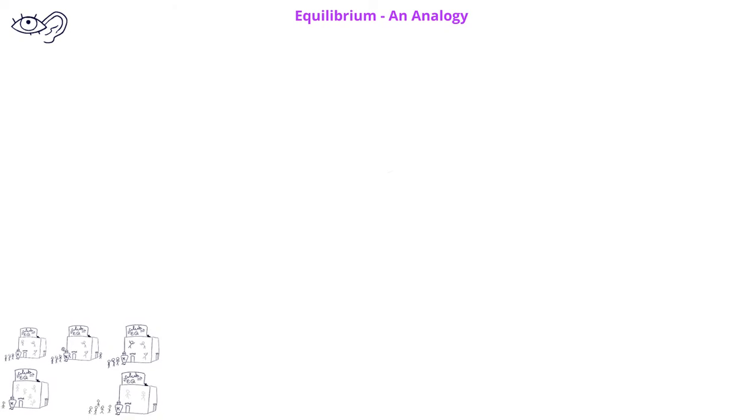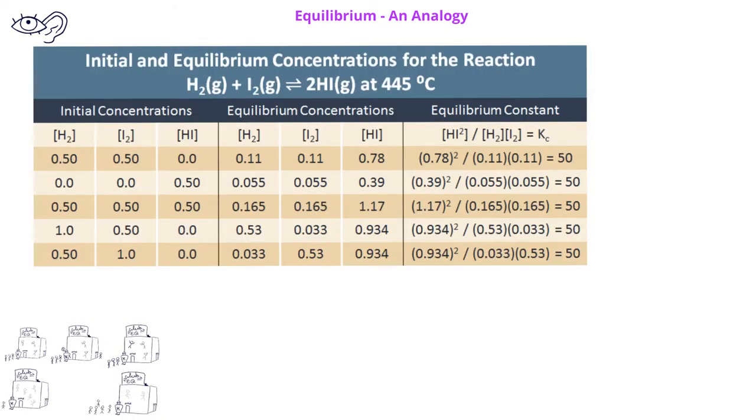Now that we've seen an analogy for equilibrium, let's look at some numerical data to see how equilibrium really works. In this data table, we have a series of five different experiments, and we've monitored the concentrations of the hydrogen, the iodine, and the hydrogen iodide at their initial conditions,